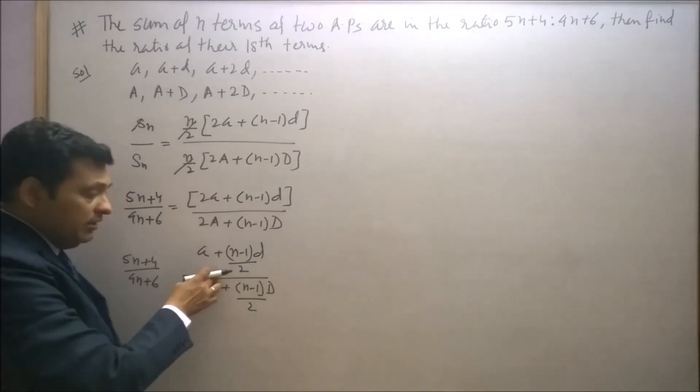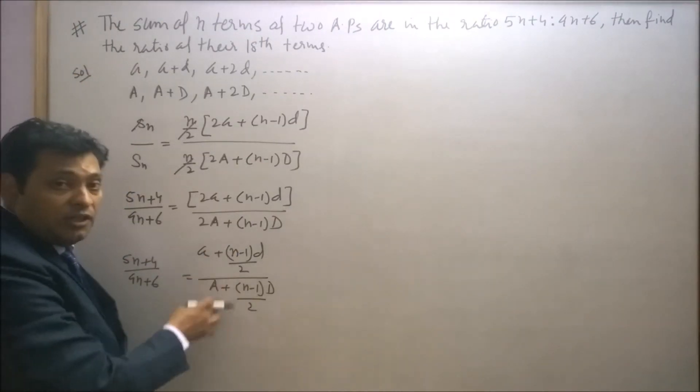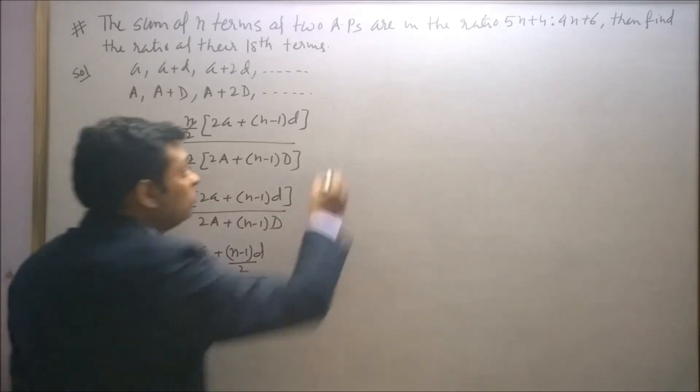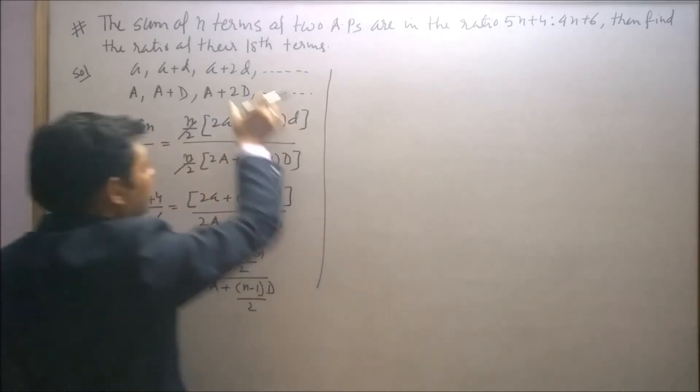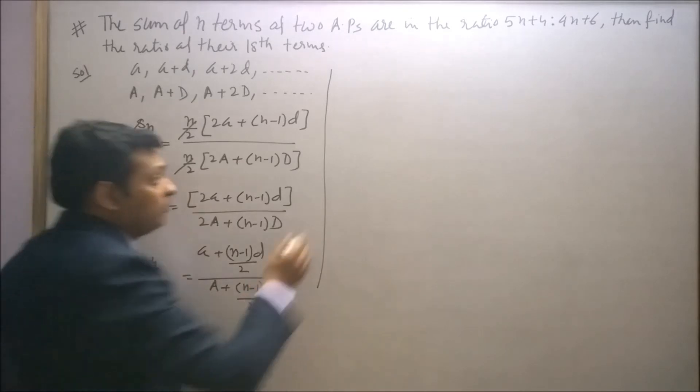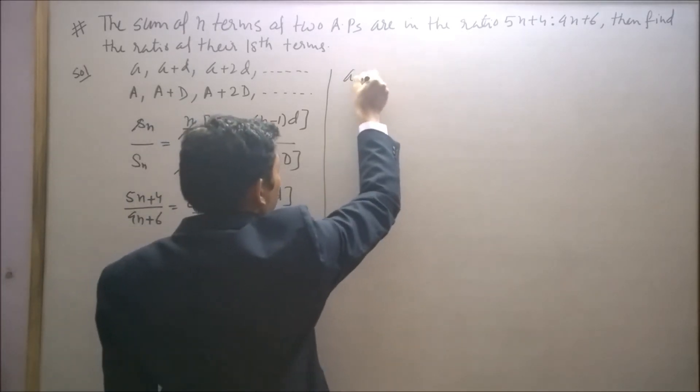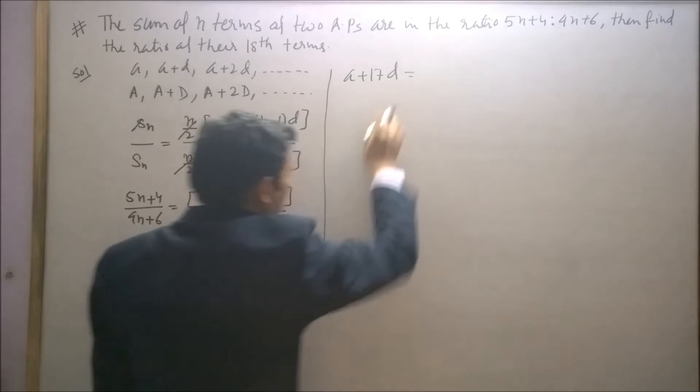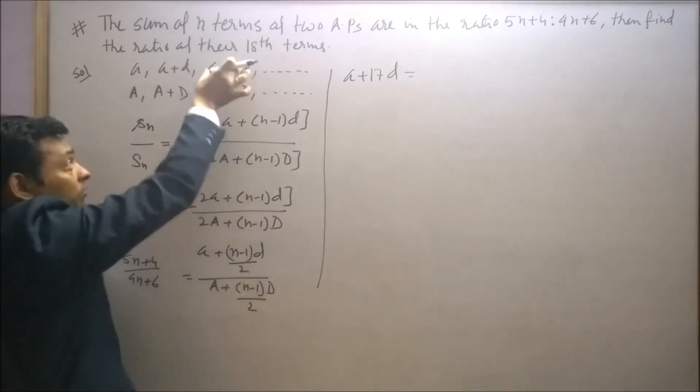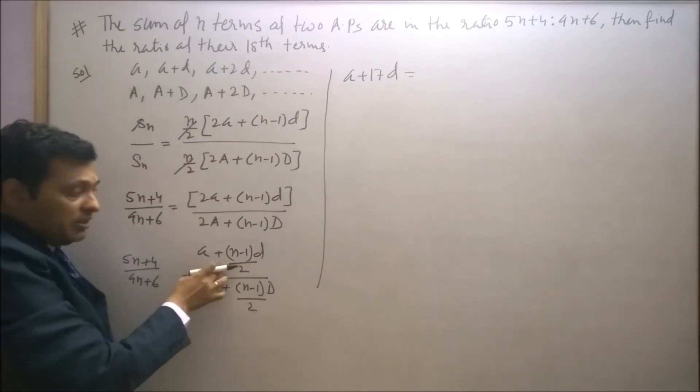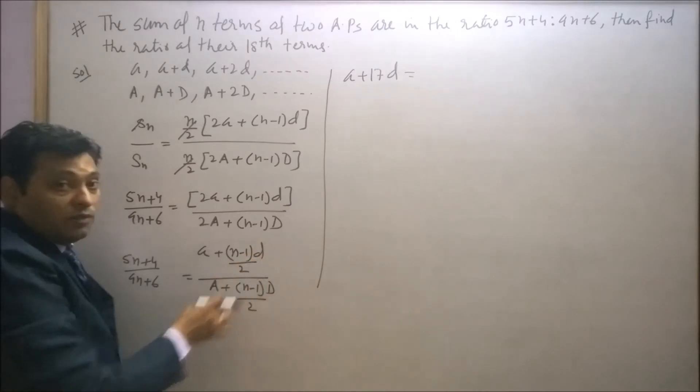Let us assume that these terms indicate the 18th terms of the given AP. So 18th term of this AP will be written as a plus 17d. Now we have assumed that 18th term of this AP is equal to a plus n minus 1 into d upon 2.